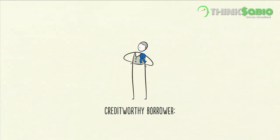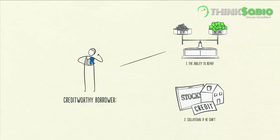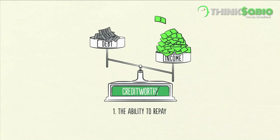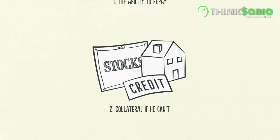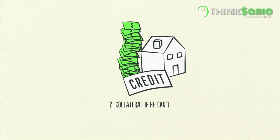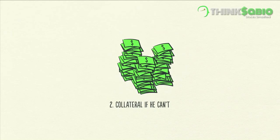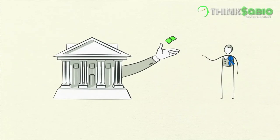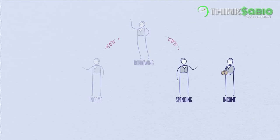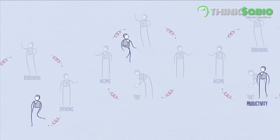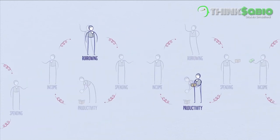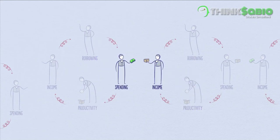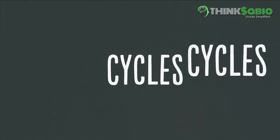A credit-worthy borrower has two things: the ability to repay and collateral. Having a lot of income in relation to his debt gives him the ability to repay. In the event that he can't repay, he has valuable assets to use as collateral that can be sold. So increased income allows increased borrowing, which allows increased spending. And since one person's spending is another person's income, this leads to more increased borrowing, and so on. This self-reinforcing pattern leads to economic growth and is why we have cycles.